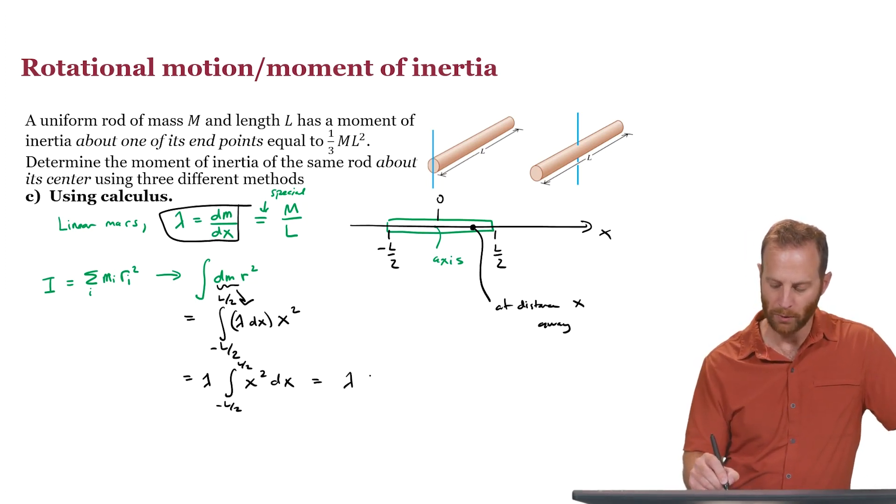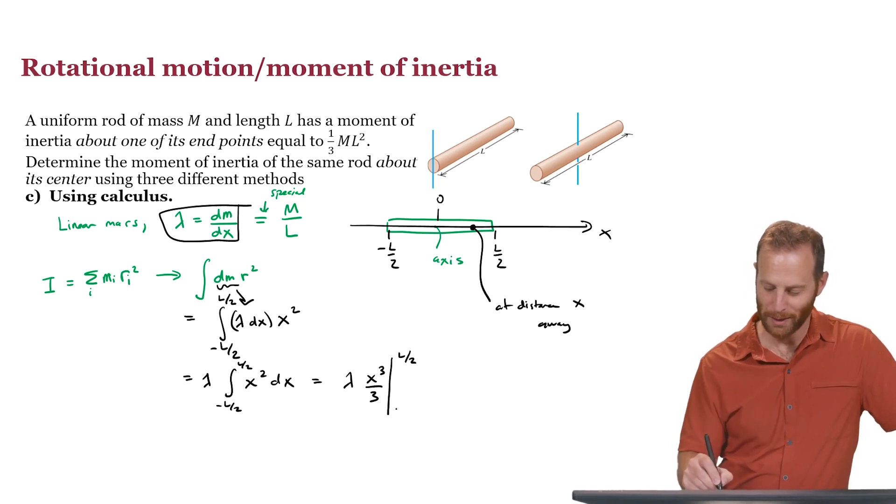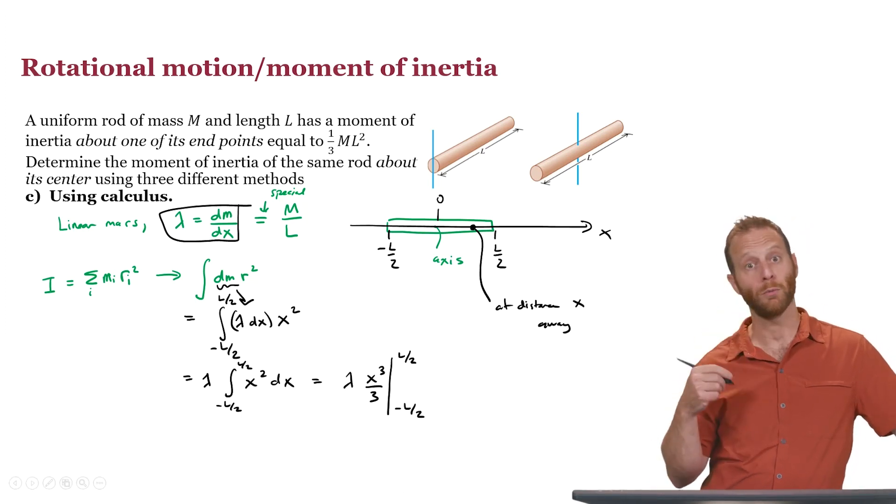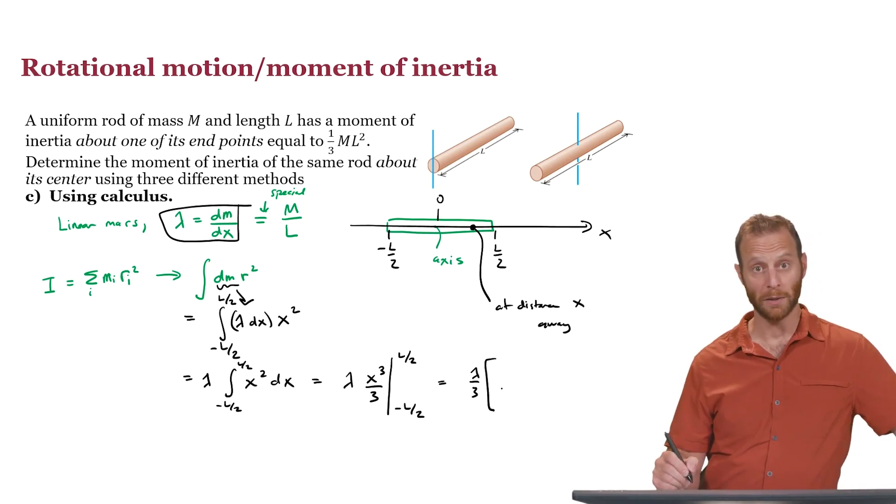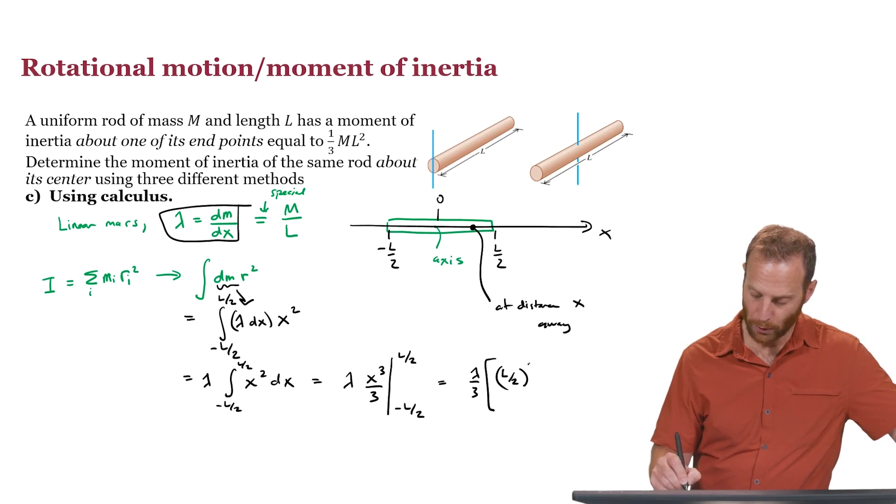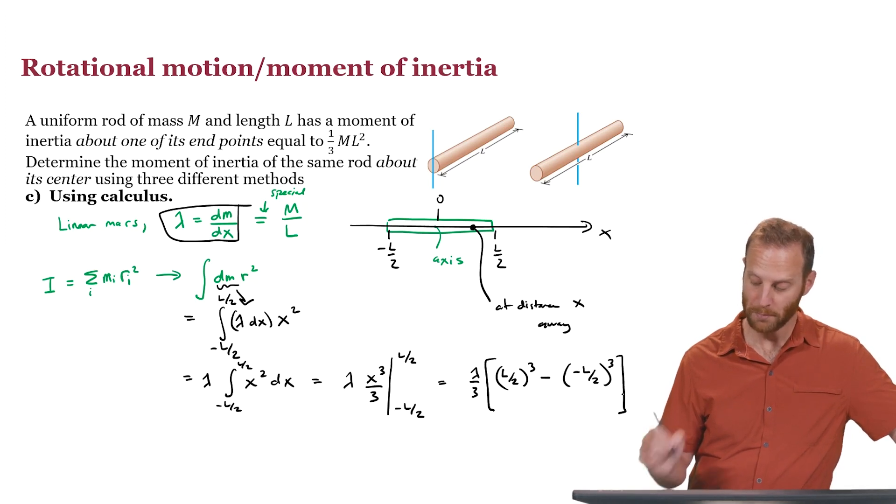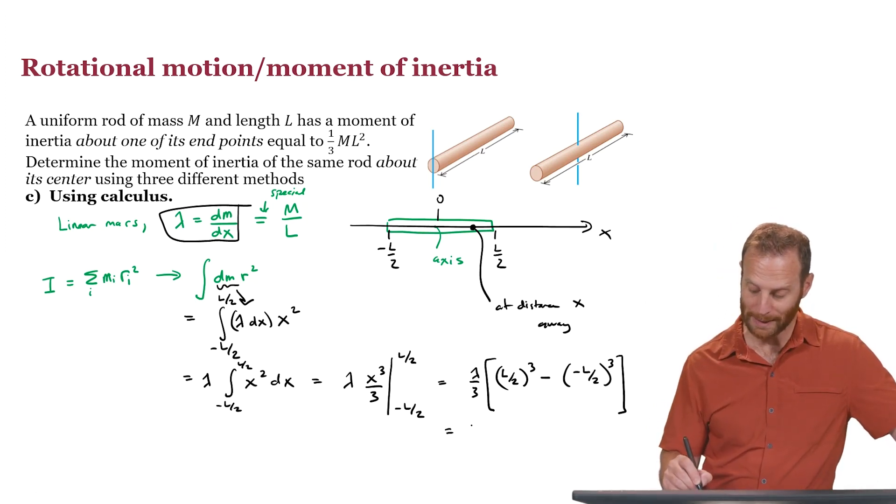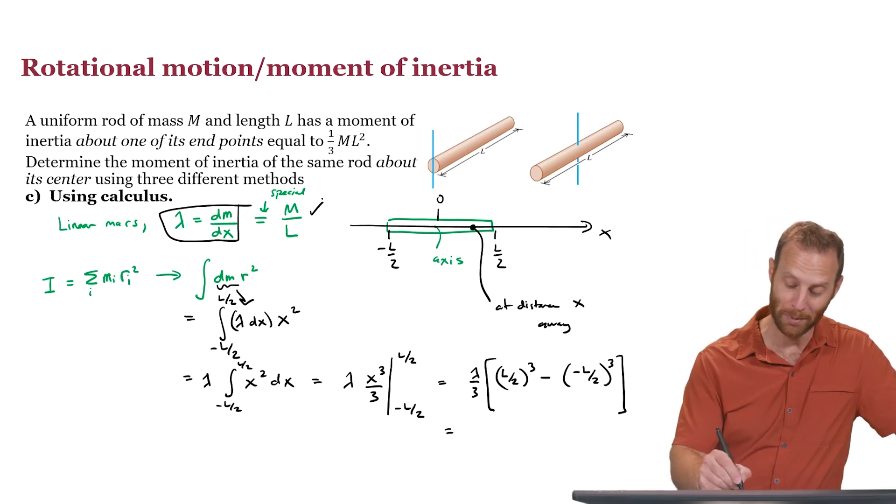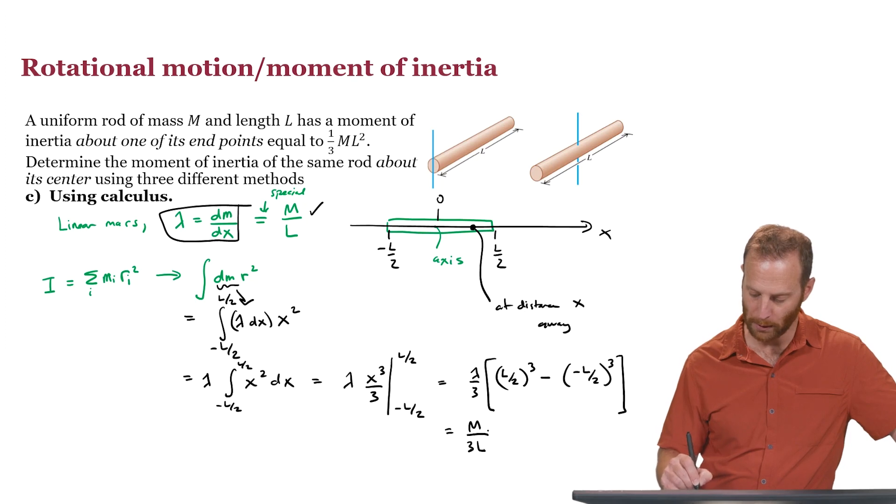Upon doing that integral, we've got lambda, we've got x to the third power over 3. Evaluate it at l over 2 and minus l over 2. Just be very careful about your minus signs. At this stage, we've got lambda over 3, and now we'll evaluate this integral. This is l over 2 cubed minus a minus l over 2 cubed. Because these are cubes, the minus signs will end up canceling, and this will be additive. This turns out to be lambda over 3. Let's keep in mind lambda is just m over l. So this is m over 3l times l cubed over 8 plus l cubed over 8.